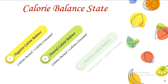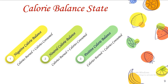The third and final state is positive calorie balance. This state is ideal if your aim is to gain weight or increase body mass — especially for bodybuilders or those looking to put on weight. In this state, your calories burned is less than your calories consumed. These extra calories are stored in the body as glycogen in muscle or liver, or as body fat.